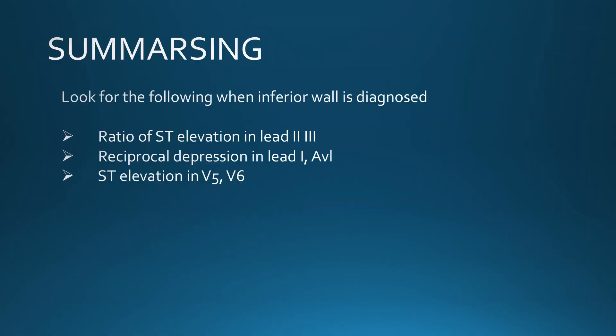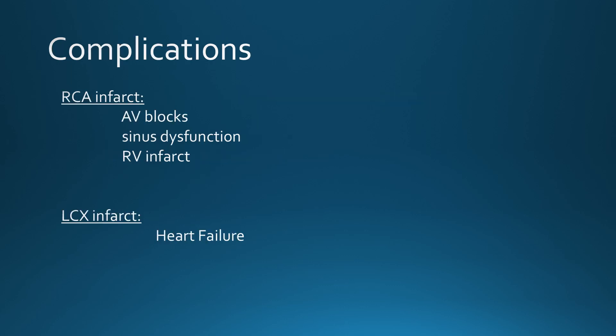To summarize the key pearls: whenever you encounter an inferior wall MI, compare ST elevations in lead 2 versus lead 3, look for depressions in lateral leads — especially lead 1 and AVL — and check for ST elevation in V5 and V6. Based on this information, you can determine the likely culprit artery.